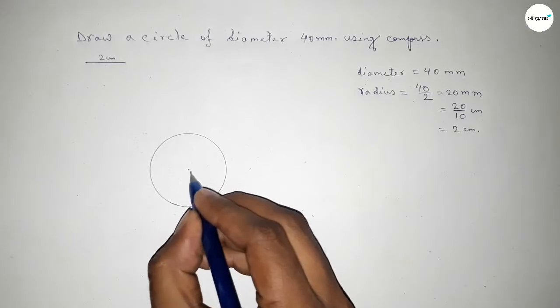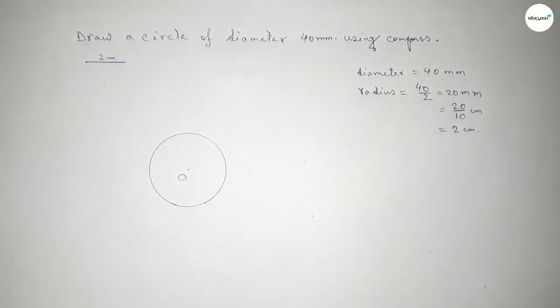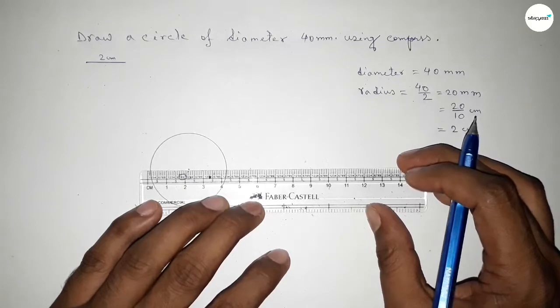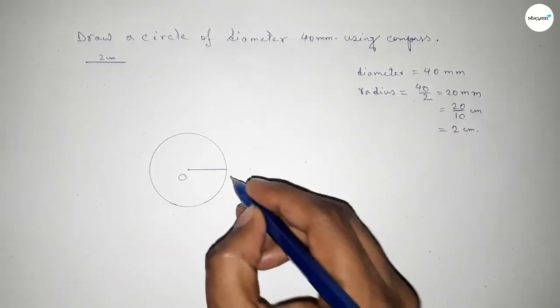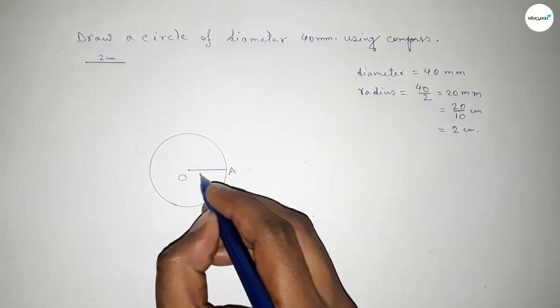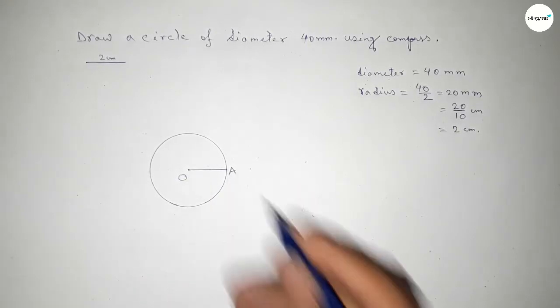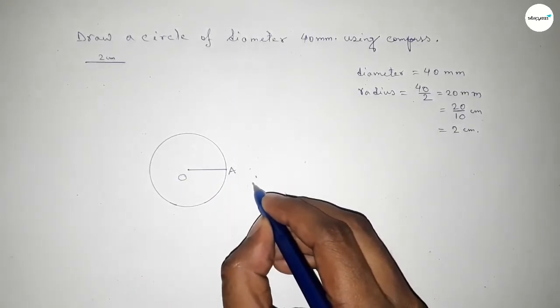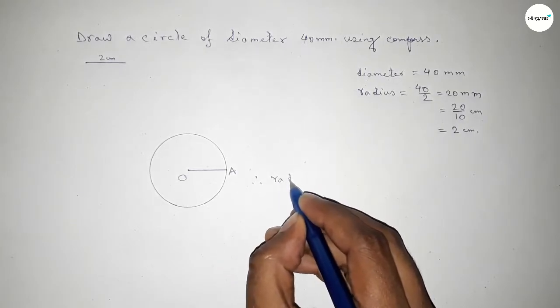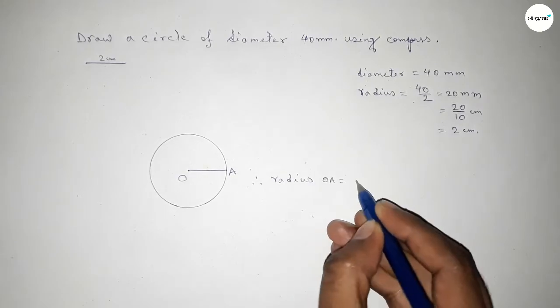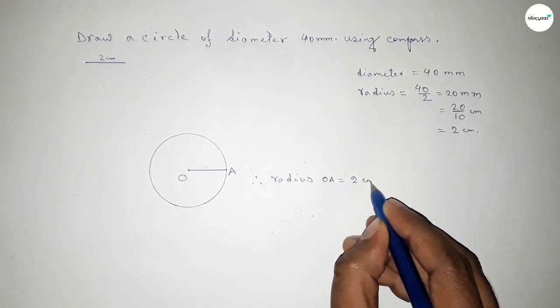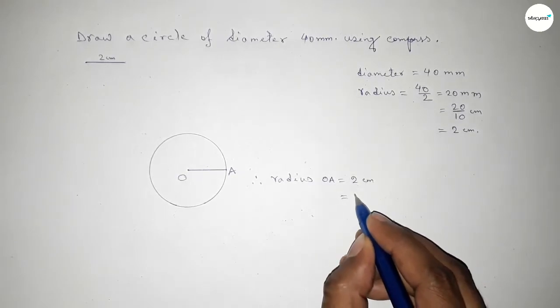So this is the center of this circle. Taking O as the center, now joining this and this is the radius of this circle. So taking here O-A, therefore radius OA equal to 2cm. Now converting into millimeter, so 2 multiplied by 10, this is 20 millimeter.